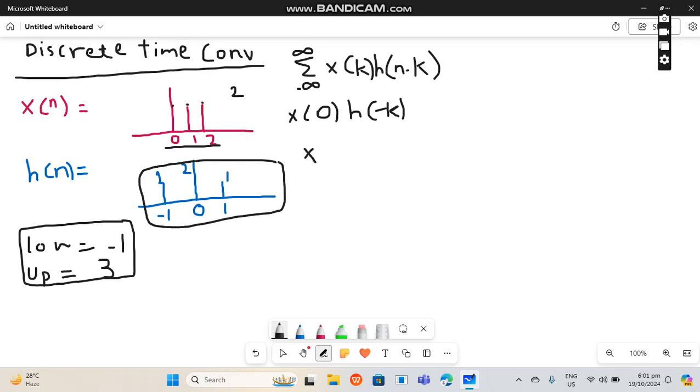For x of 1, h of 1 minus k. You have to convolve this, so just shift this h of n to the right side. It becomes 0, 1, 2.